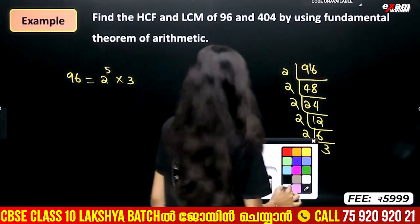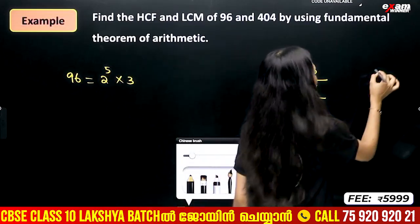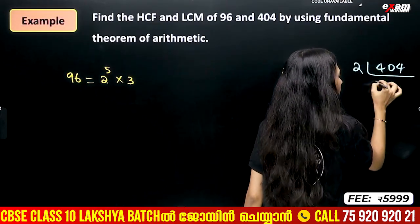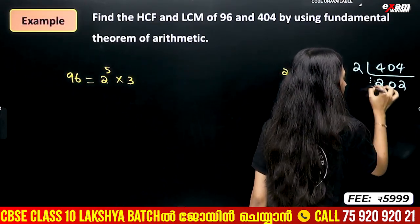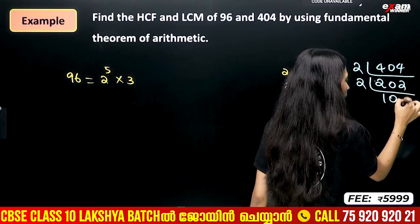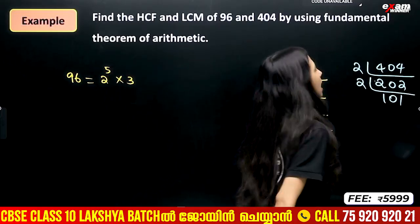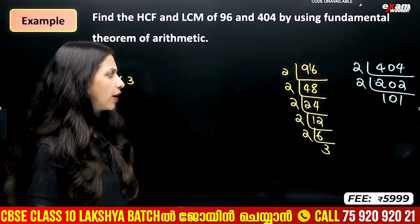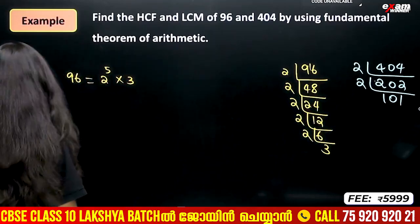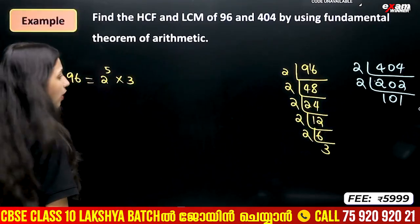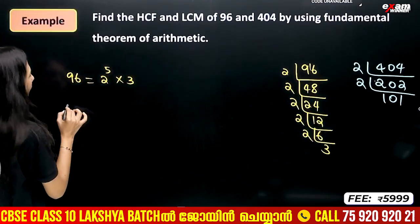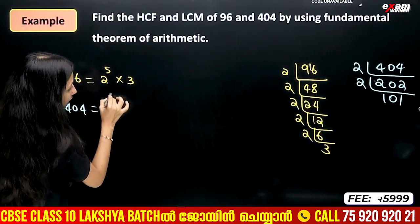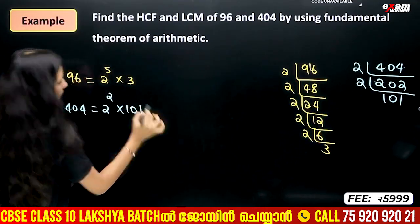Now we factorize 404. Dividing by 2 gives us 202, then 101. So 404 is equal to 2 squared into 101.